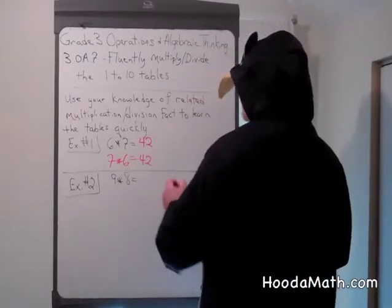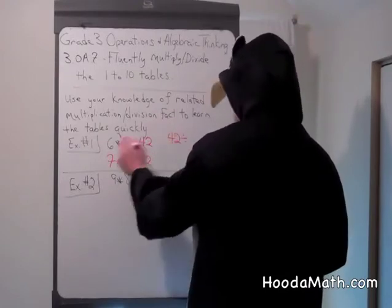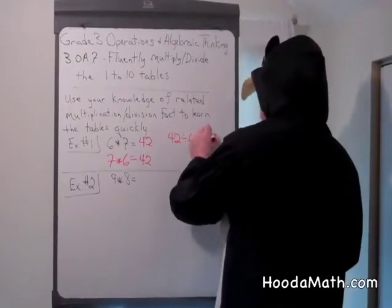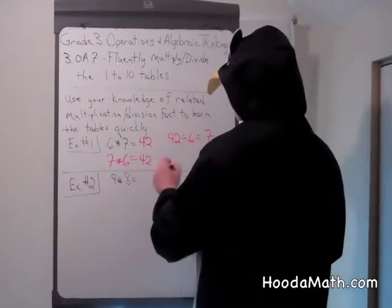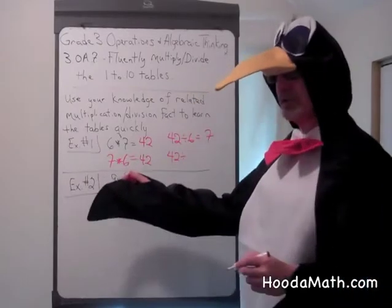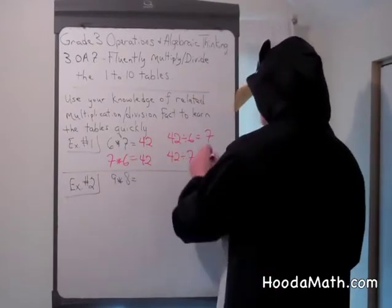The related division facts are you take the product, 42, and divide it by 6, and that would be 7. And then you take the product 42 again, this time dividing by 7, and your result or quotient is 6.